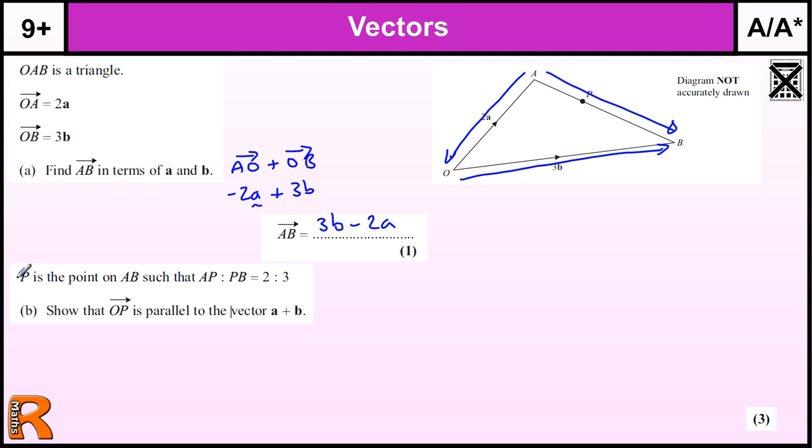So that's a pretty standard opening question. P is the point on AB such that AP to PB is 2 to 3. So this ratio is 2 to 3, it's 2 out of 5, 2 fifths from A to P. This is 2 fifths of AB, because it's in the ratio 2 to 3. You've got 2 out of a total of 5.